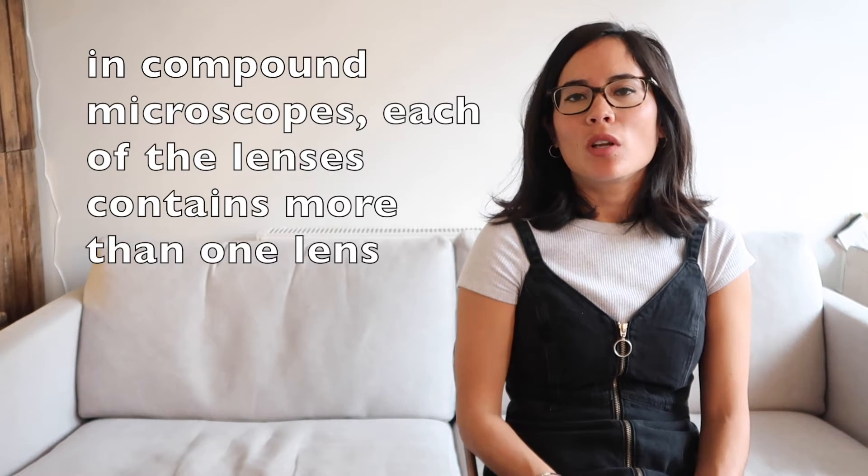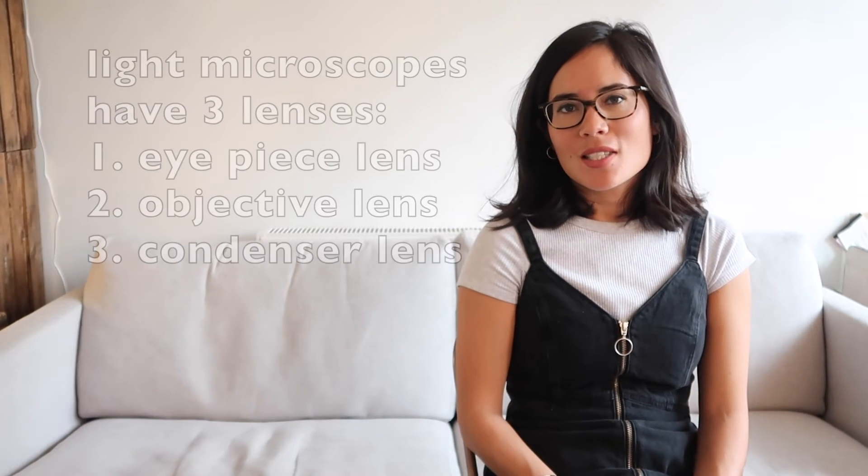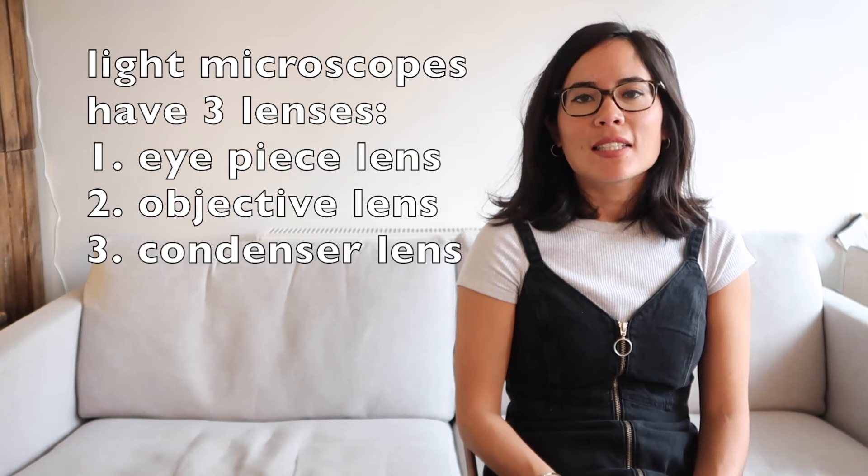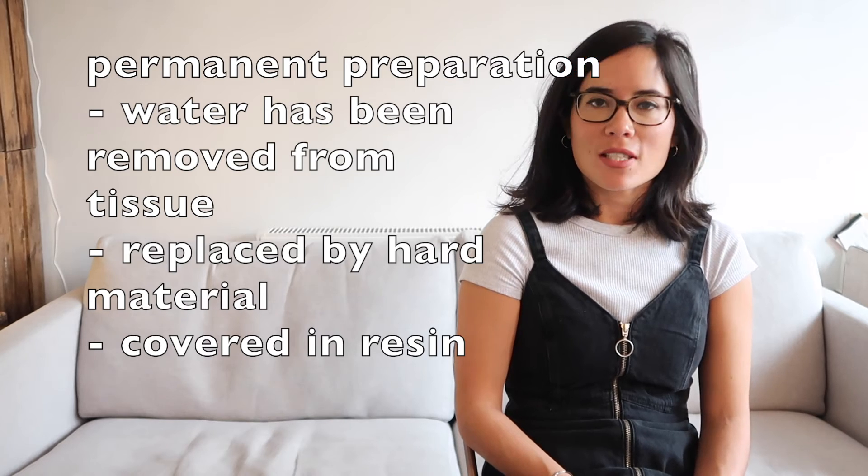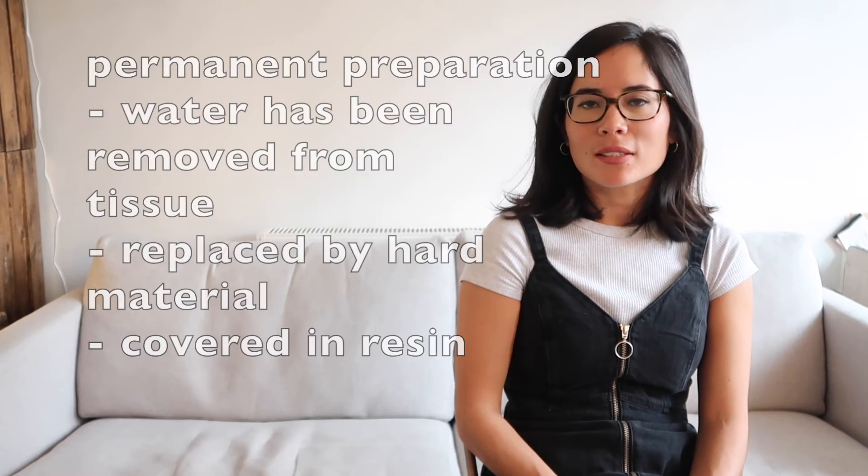Starting with the light microscope, it's called a light microscope because it uses light to view the sample. A compound microscope is another name for it because each of its lenses contains more than one lens. There are three main lenses: the eyepiece lens, the objective lens, and the condenser lens. The condenser lens focuses the light before it hits the sample. The sample needs to be very thin to enable light to pass through it. There are two types of preparation: temporary preparation and permanent preparation.